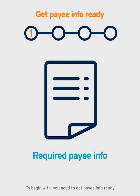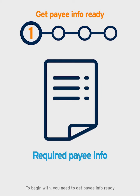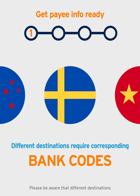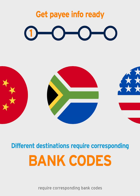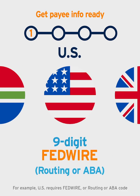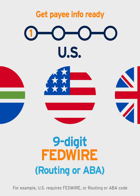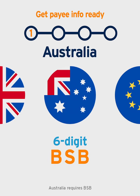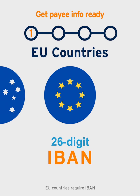To begin with, you need to get payee info ready. Please be aware that different destinations require corresponding bank codes. For example, US requires Fedwire, Routing, or ABA code. UK requires Sort code. Australia requires BSB. EU countries require IBAN.